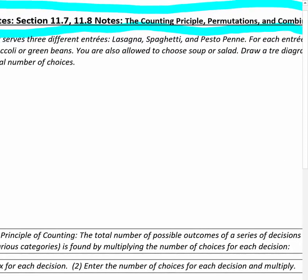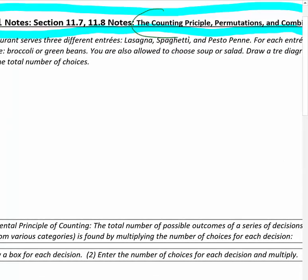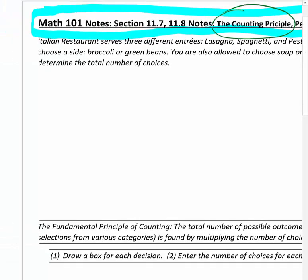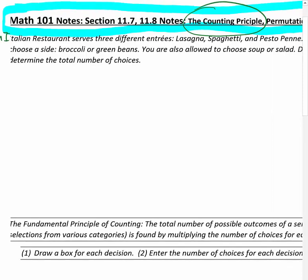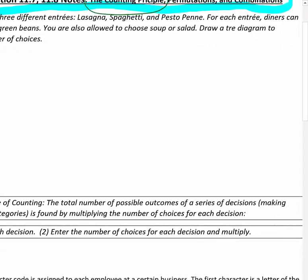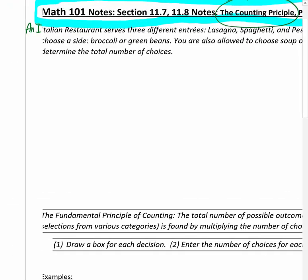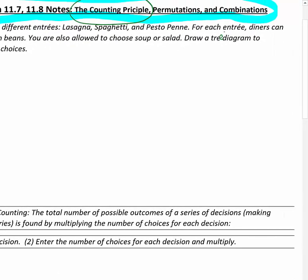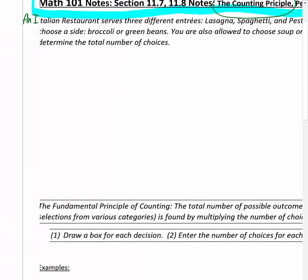The counting principle - we'll start with that as a reminder. An Italian restaurant serves three different entrees: lasagna, spaghetti, and pesto penne. For each entree, diners can choose a side - broccoli or green beans. You are also allowed to choose a soup or salad. Draw a tree diagram to determine the total number of choices.